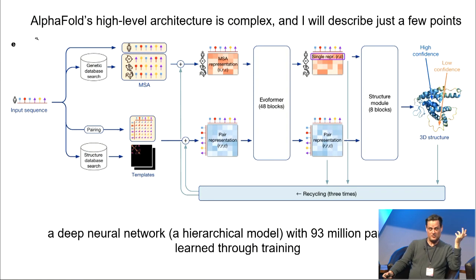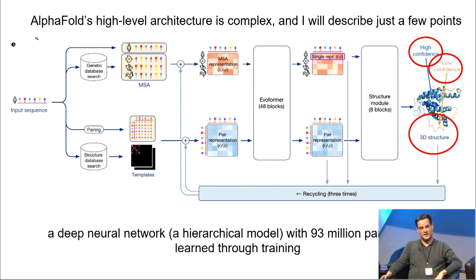It's a deep neural network, basically meaning just a hierarchical model, with 93 million learned parameters. The input is just the sequence of amino acids, the linear sequence. Maybe you get it from genomics. And the output is, in part, a three-dimensional structure, so the three-dimensional coordinates of all of the amino acids. And it also outputs confidence scores, so it will tell you where it thinks it's got it right, and it will tell you where it thinks it's gotten wrong. That's also learned from the model.